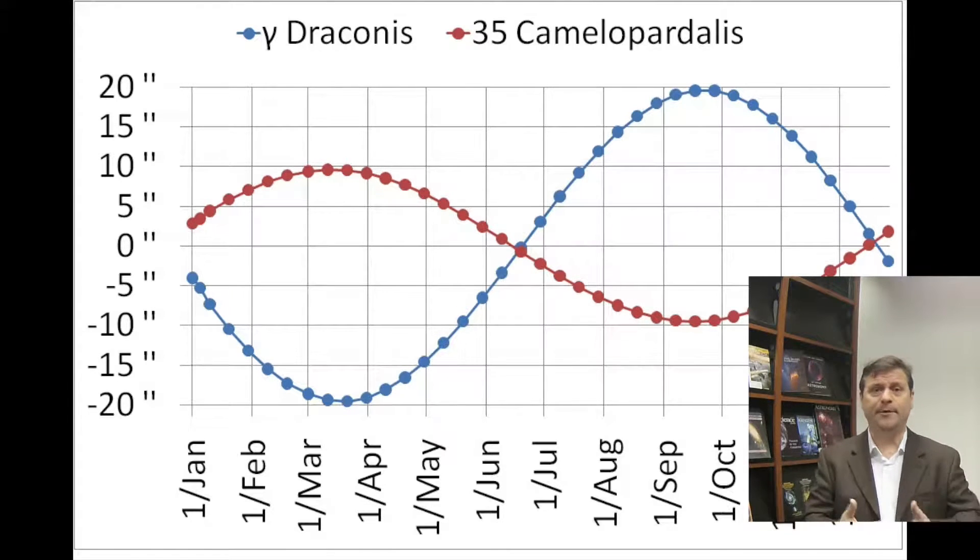This was really strange because they said this can't be affected by parallax either. So maybe it's something in the sky, maybe I've got some problem with my telescope. But what ended up being is that in 1728, they actually discovered the motion of the Earth in the following way. This is called stellar aberration.